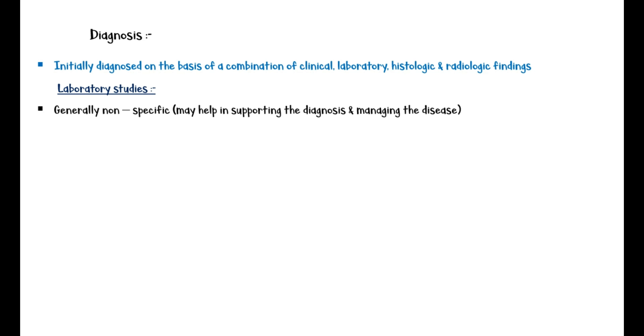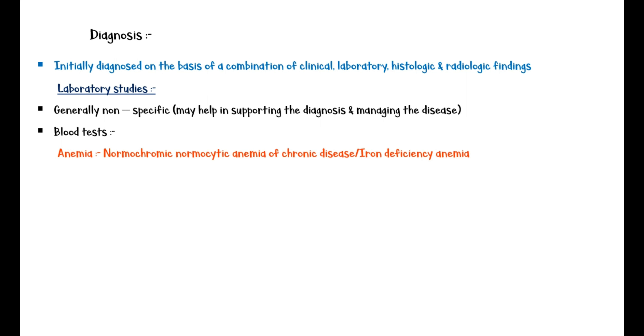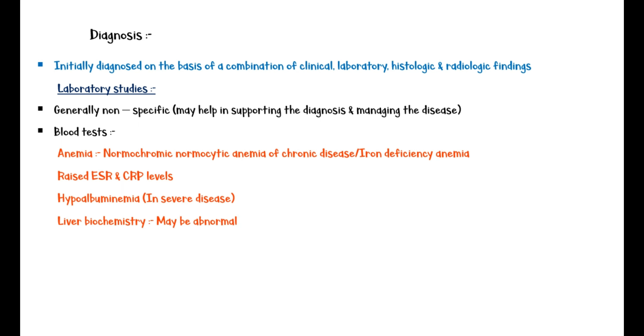Crohn's disease is initially diagnosed on the basis of a combination of clinical, laboratory, histologic, and radiologic findings. Laboratory findings are generally nonspecific but may help in supporting the diagnosis. Common findings in blood tests include anemia, which may be normochromic normocytic anemia of chronic disease or iron deficiency anemia; raised ESR and CRP levels; hypoalbuminemia in severe disease; and abnormal liver biochemistry.